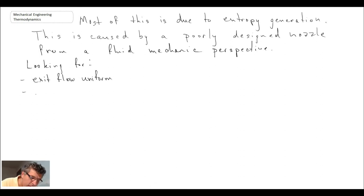We want the exit flow from the nozzle to be uniform. We want to avoid separation inside of the nozzle. That means we do not want the boundary layer to separate off the wall. You usually want to have a minimum length because you don't want a long nozzle. And another thing we want to try to minimize the boundary layer thickness at the exit because that will help give us a uniform flow.